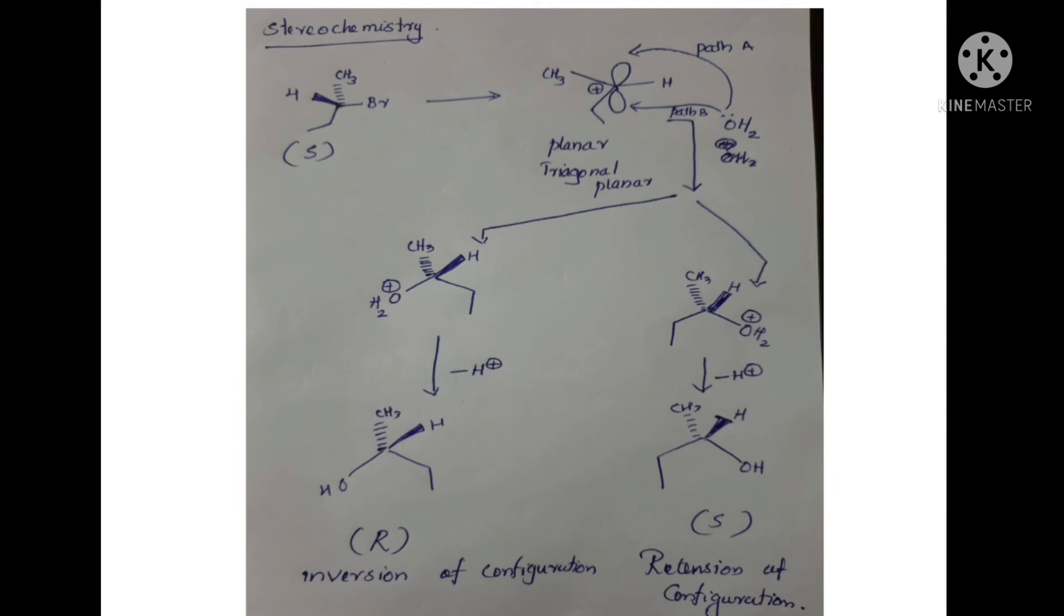For example, this is a compound. This has S configuration initially. This has a carbon-bromine bond.